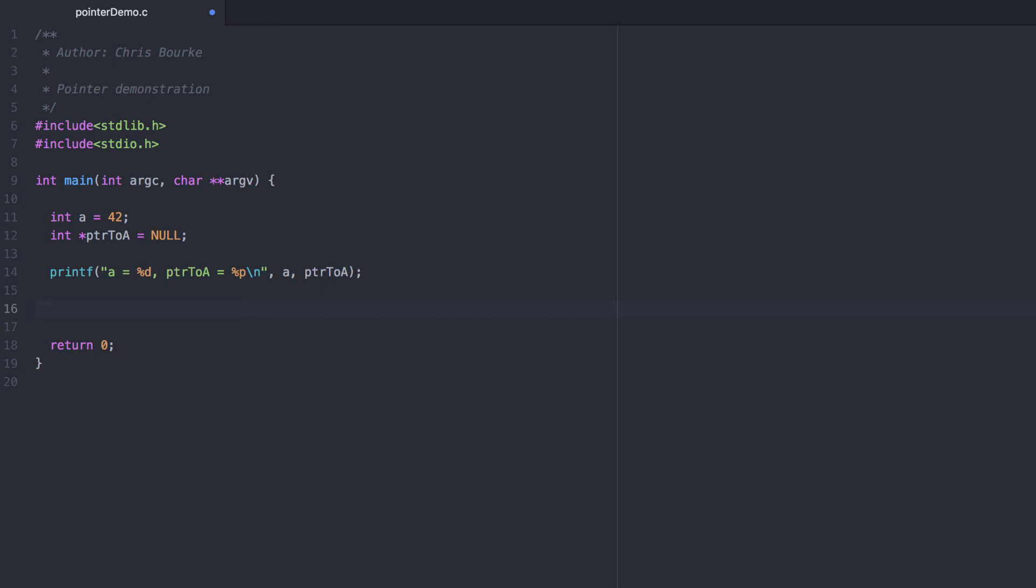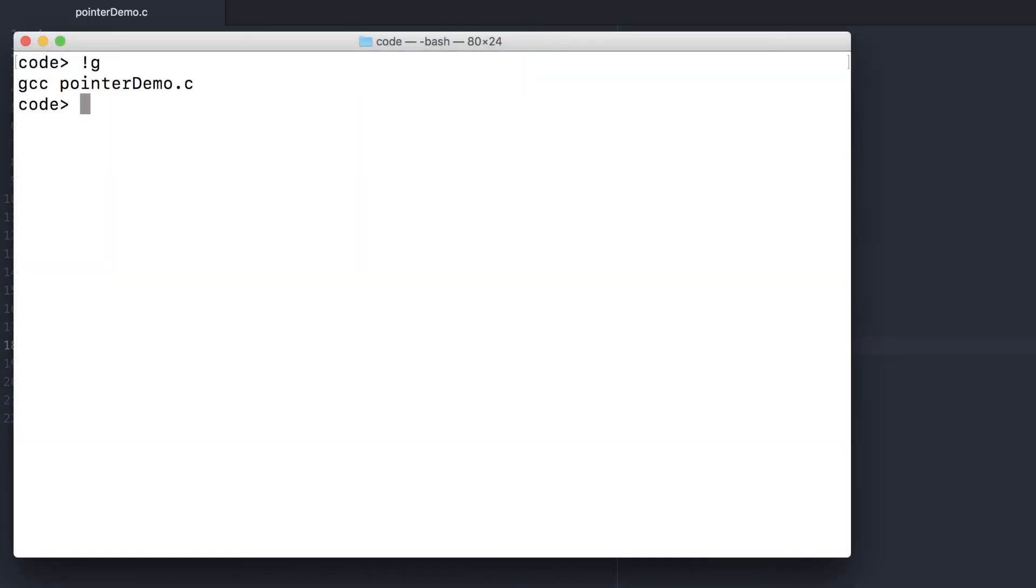Now let's make the pointer point to A. And now that it points to a valid memory address, we can dereference it to see its contents. A is being stored at this memory location. And when we dereference it, we get the content stored there. Let's run it again.